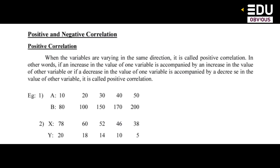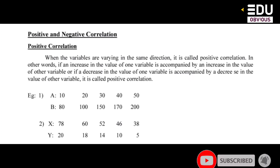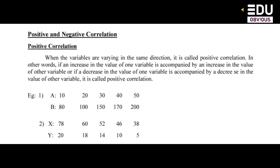Looking at the figure: when A is 10, B is 50; when A is 20, B is 100; when A is 30, B is 150 — this is positive correlation. In another example, when X is 78, Y is 20; X is 68, Y is 80; X is 52, Y is 40. Both variables changing in the same direction is positive correlation.